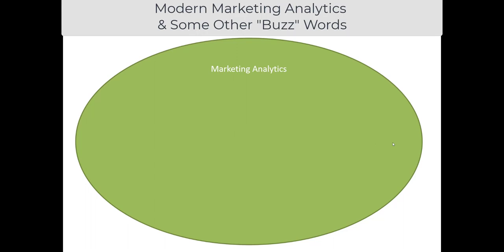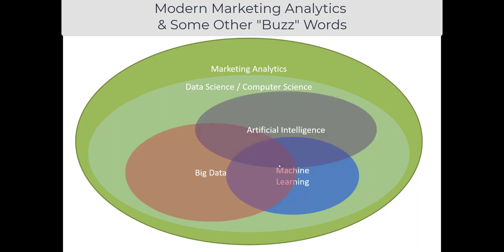There are several other buzzwords, academic and jargon-y words, or terms in the news media that I want to evaluate together. In this big tent of marketing analytics, there are other terms that sort of hide within or oversee it. You might see phrases like data science or computer science, and terms like artificial intelligence, machine learning, and big data.